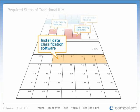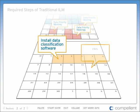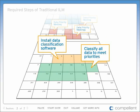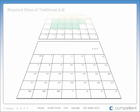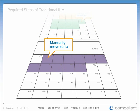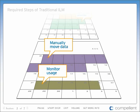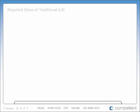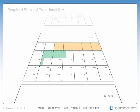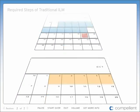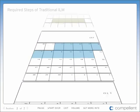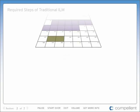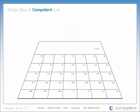The debate over priorities can take some organizations weeks of discussion. Adding to the cost and time, data classification software must be installed, then run to classify all files to match the priorities. To move data to the appropriate tiers, you must either install another software package or manually move all the data. Either way, IT will spend considerable time monitoring usage and moving data. And because the process is not fully automated, it must be repeated with every increase in physical storage or whenever business priorities change.